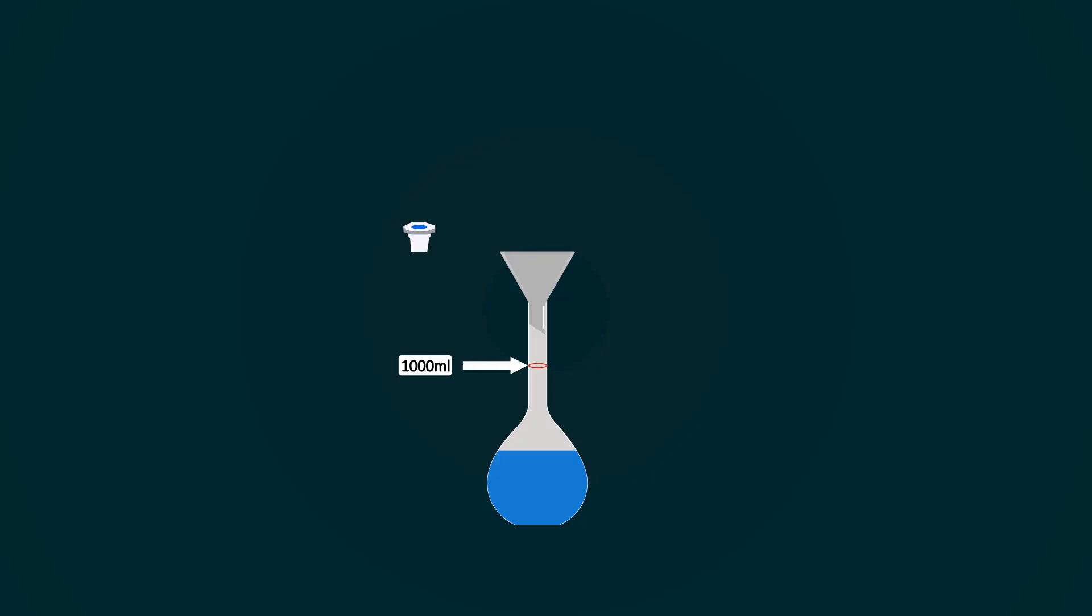You have to fill it up to the 1000 milliliter point. For that, you have to add more distilled water into it. So take distilled water into an empty beaker and pour it into the volumetric flask to fill it up to the 1000 milliliter point.